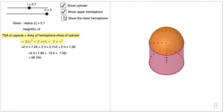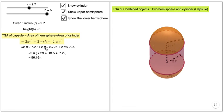Cylinder, upper hemisphere, lower hemisphere - add all three surface areas to get the surface area of the combined object.